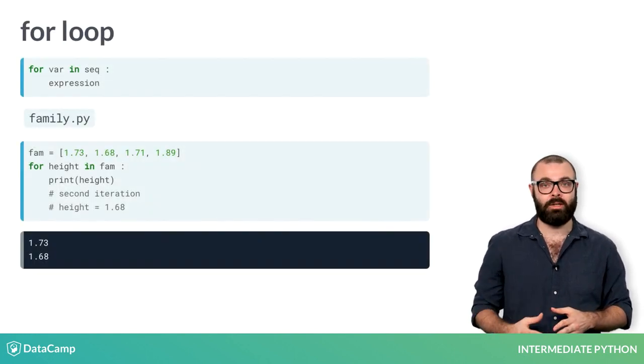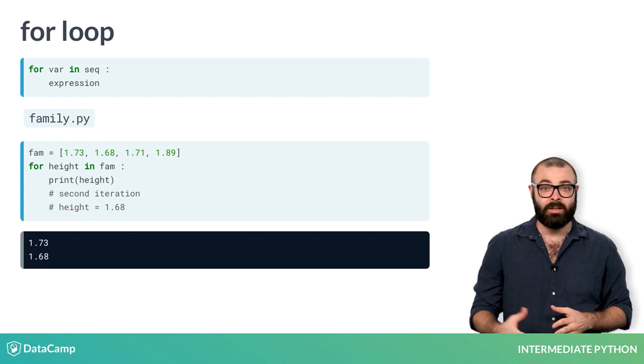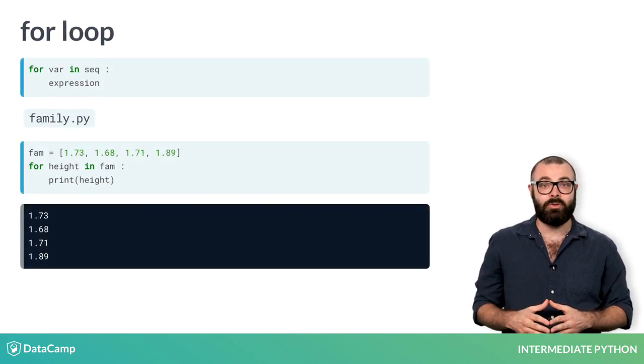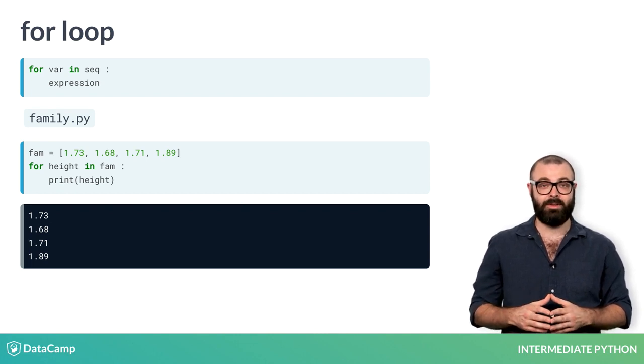In the second iteration, Python stores the second value of fam in height, being 1.68 now, and prints out height again. This process continues until all heights in fam have been iterated over, and we end up with four separate printouts. Great!